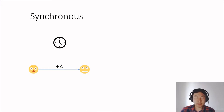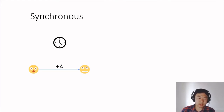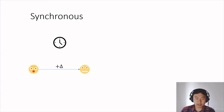Consider, for example, a setting where the network delay is unpredictable and gets large at specific points in time. Maybe the weather is bad, or maybe the communication network is under attack. Then synchronous protocols lose all the security guarantees, which is highly undesirable.